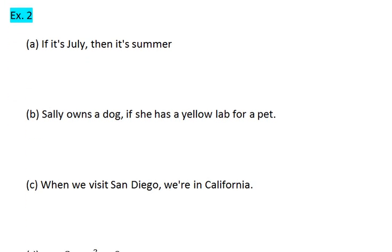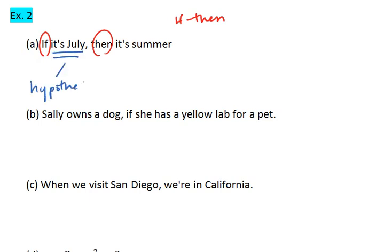For our first example we have: 'If it's July, then it's summer.' Look for the words 'if' and 'then.' The if-then conditional statement is the most common that we'll look at. Everything that follows the 'if' is the hypothesis, and everything that follows the 'then' is the conclusion.